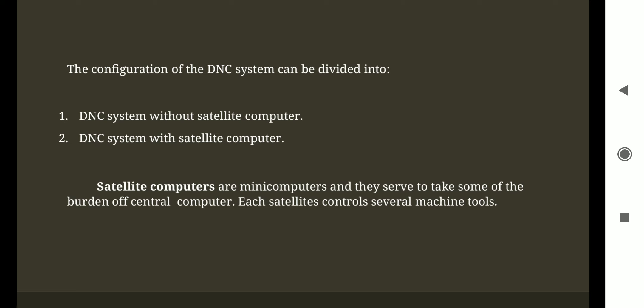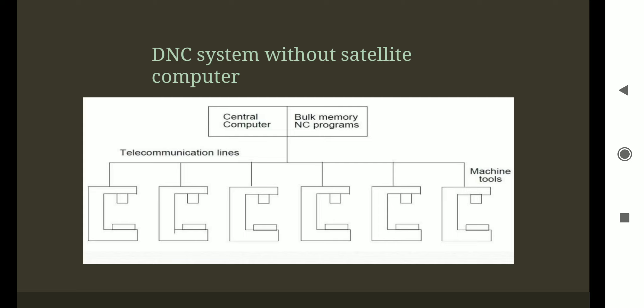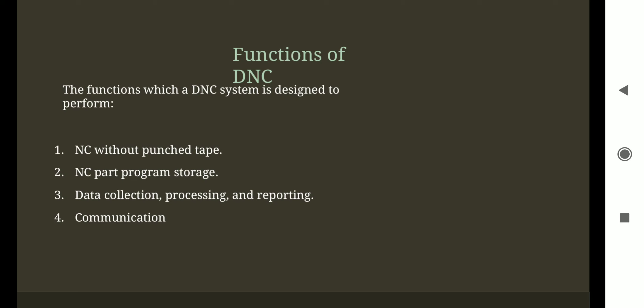In a DNC system with satellite computers, the satellite computers take some of the burden off the central computer, and each satellite controls several machine tools. The functions which a DNC system is designed to perform include: NC part program storage, data collection, data processing, data reporting — where telecommunication lines are used for data collection, processing, and reporting — and communication between the server computer and the machine tools.